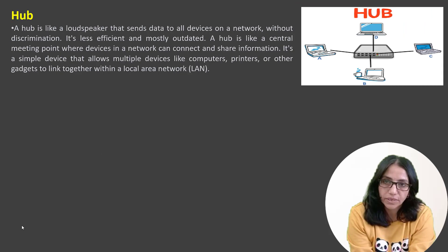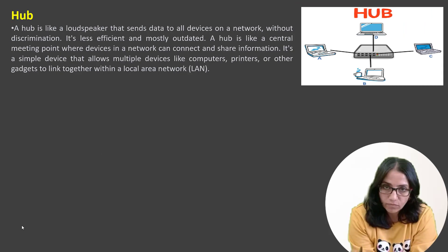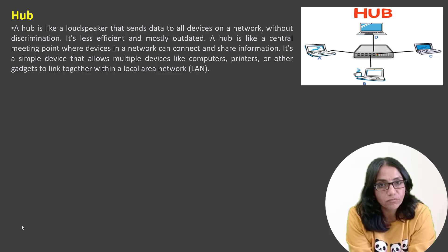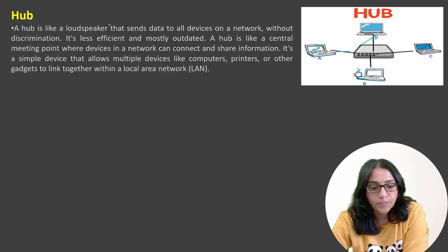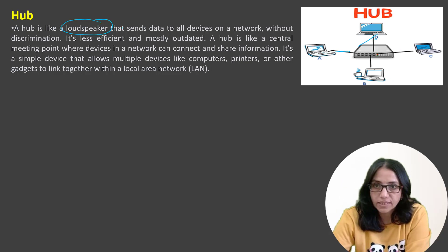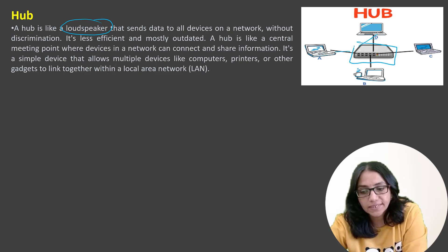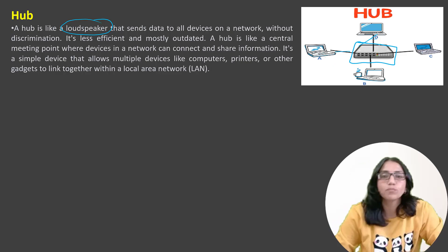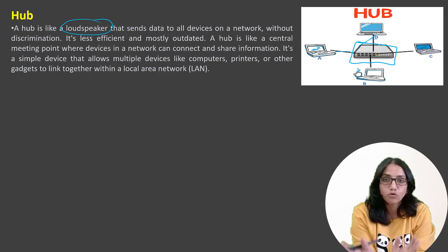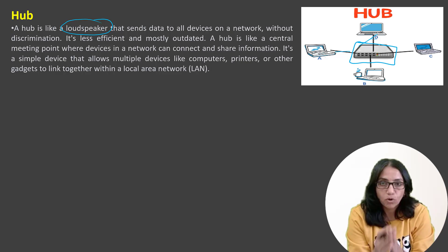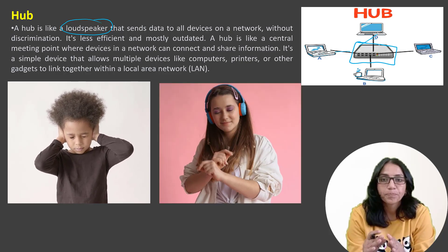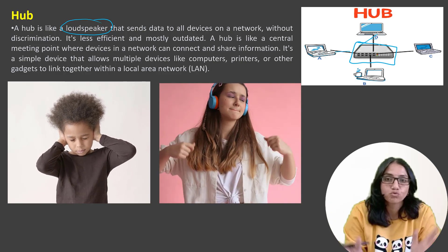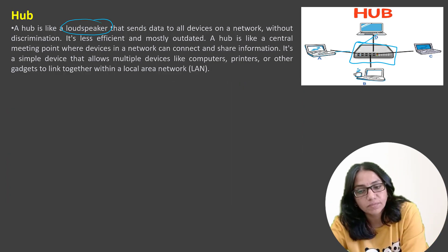Now we will talk about the hub. What is the hub? The hub is also a network device. In local area networks where multiple devices are connected, it sends all the data together to all devices. You can understand this as a loudspeaker. All the devices connected to it — A, B, C, D — receive all the data together. Just like a loudspeaker in a colony where everyone hears the announcement whether they want to or not.